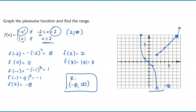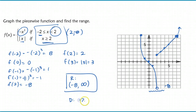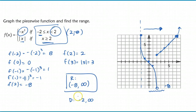For the domain of this piecewise function, you can see it clearly: it goes from negative 2 to positive infinity, because you have a minimum x value of negative 2 but no maximum x value since it goes to positive infinity. So domain is negative 2, closed bracket, to positive infinity, open bracket. There's your domain and range.